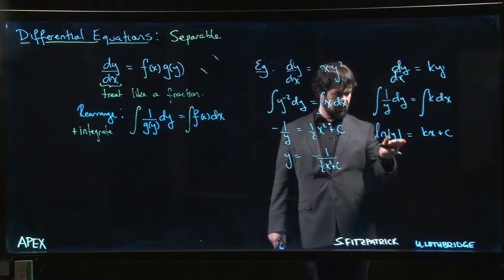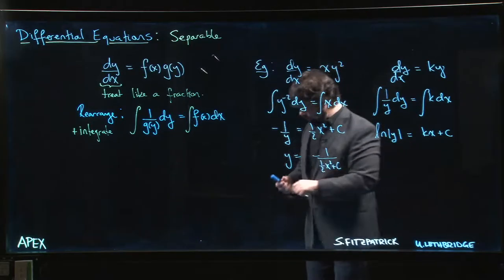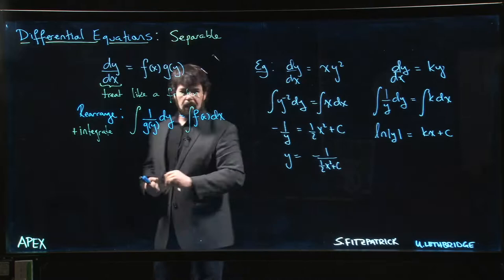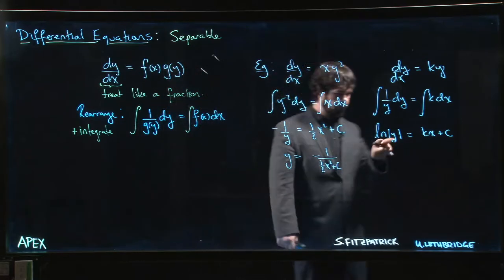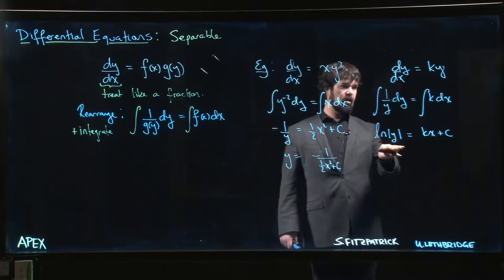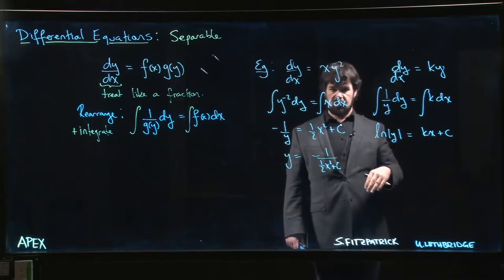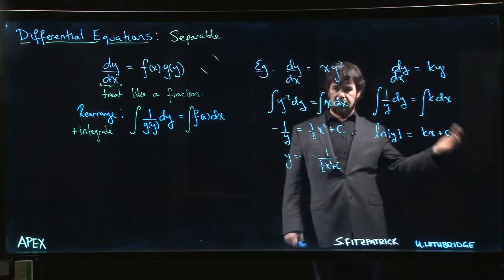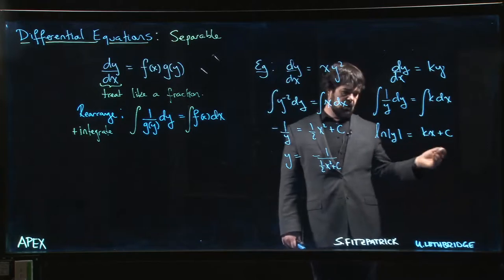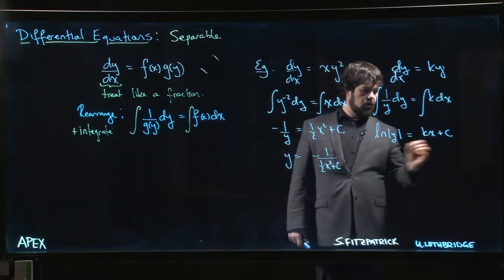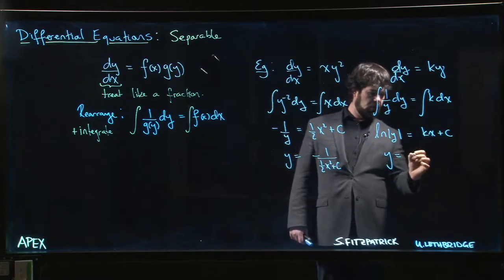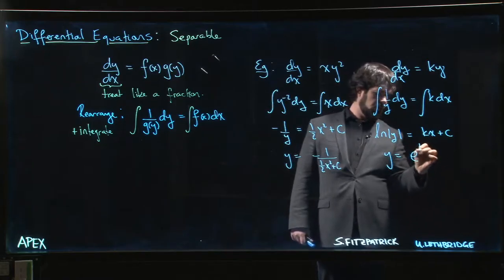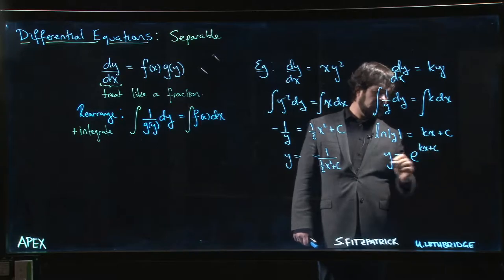Maybe you want to put the absolute value in: kx plus c. Typically, the absolute value is something that you sometimes dispense with when you're doing differential equations, and you decide on whether you should use plus or minus y based on things like initial conditions—are you given an initial value for y that is positive or negative?